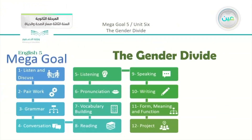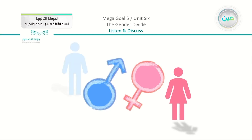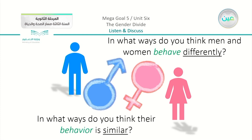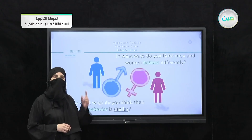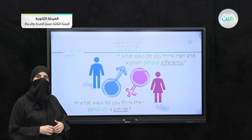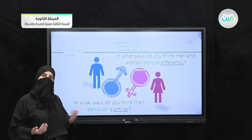Moving on, we are going to start with the first lesson, which is 'Listen and Discuss.' We have two symbols — one used for female and the other for male. Our first question is: in what ways do you think men and women behave differently? And a second question: in what ways do you think their behavior is similar? Notice the verb 'behave' and the noun 'behavior.'